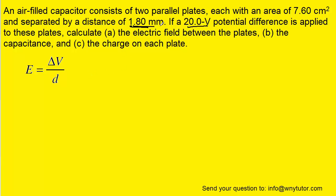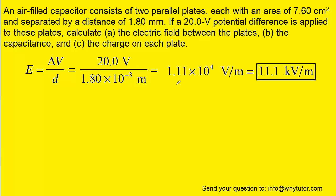Notice that we have to change the millimeters into meters by multiplying it by 10 to the minus 3. And when we plug in the known values, we get an electric field strength of 1.11 times 10 to the fourth volts per meter.